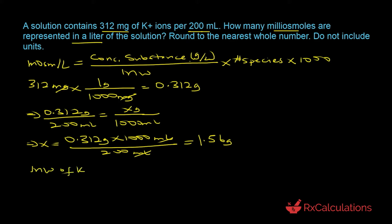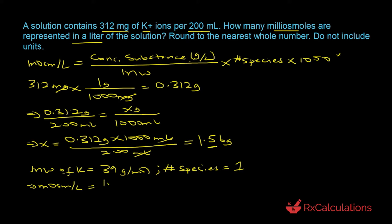The molecular weight of potassium is 39 grams per mole. Since there is only one entity — the potassium ion — the number of species equals 1. Substituting into the equation: milliosmoles per liter equals 1.56 divided by 39, times 1, times 1000, which equals 40. The question says round to the nearest whole number and do not include units, so the answer is 40.